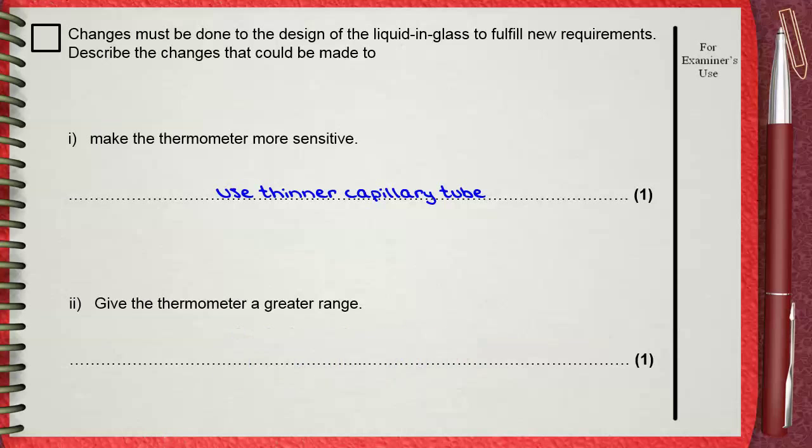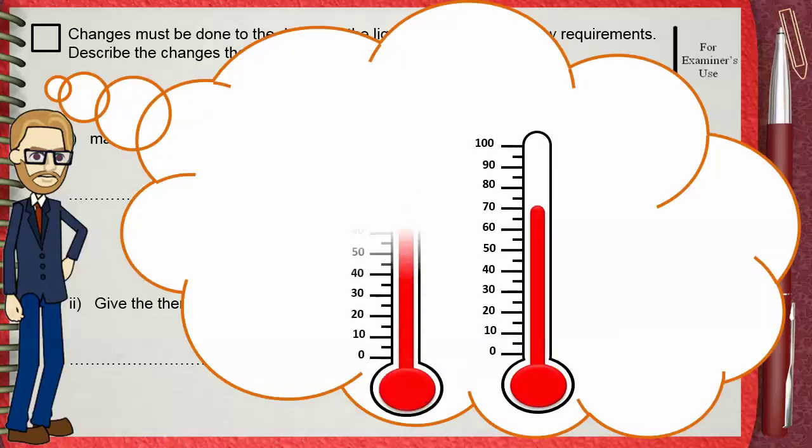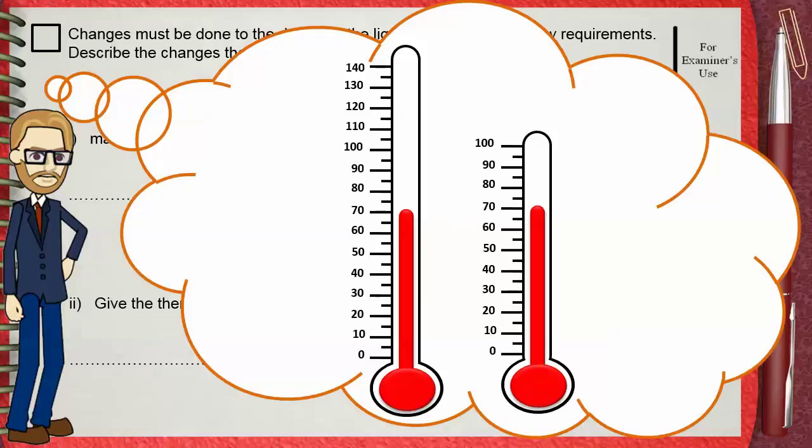This thermometer reads from 0 to 100. If you just want to increase its range, you can use a longer capillary tube, so it can expand, for example, up to 140 or more.